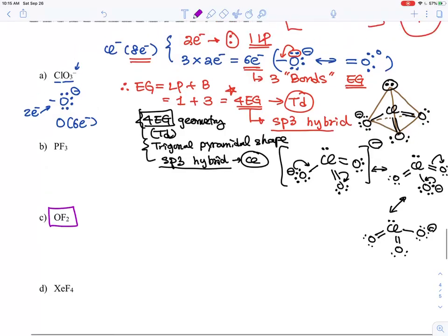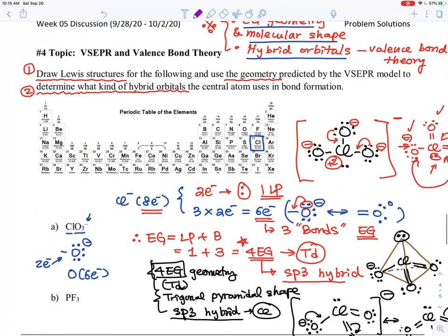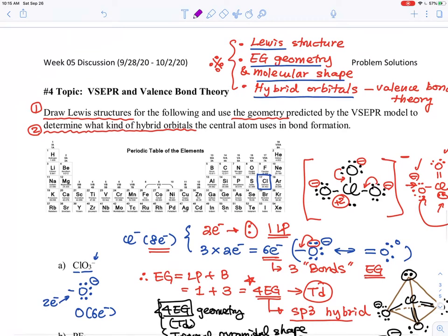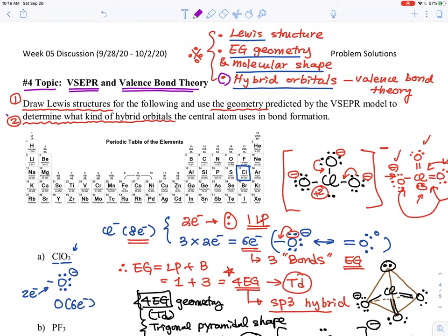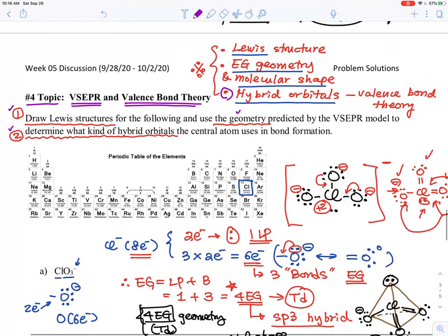Okay, so let's talk about OF2. We are talking about problem number four about the VSEPR theory and valence bond theory. They are asking about what kind of hybrid orbital, which is number two here. VSEPR is essentially what kind of geometries, and they can talk about Lewis structures as well.